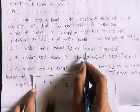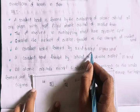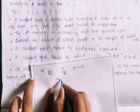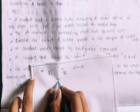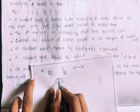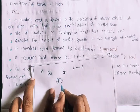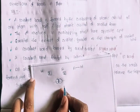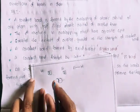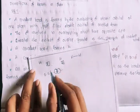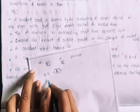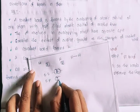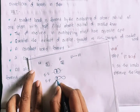Covalent bond is formed by axial overlapping. This is S-orbital overlapping with S-orbital. Axial overlap forms a sigma bond. SS overlap, SP overlap — that is, S-orbital with P-orbital — the overlap is called a sigma bond.